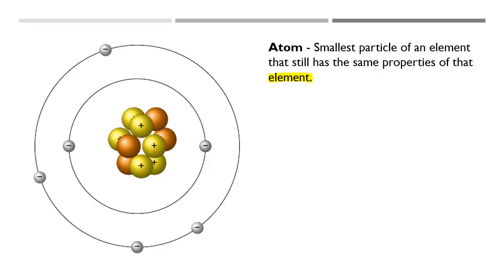And hopefully by now you know what an element is. So the first subatomic particle is called a proton. Now, the protons in this picture are those little yellow positively charged substances. They have little plus signs in them. Protons have a positive charge.